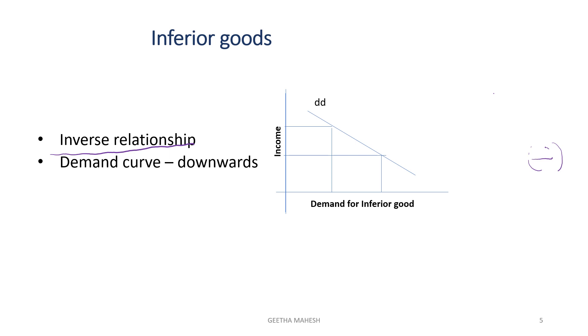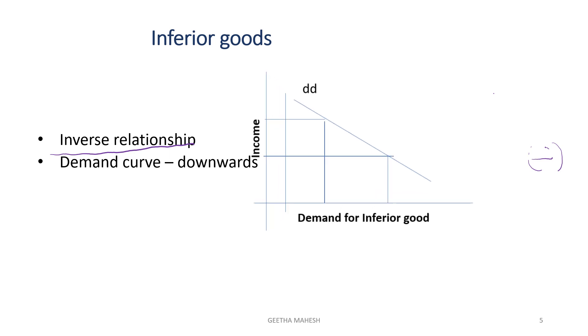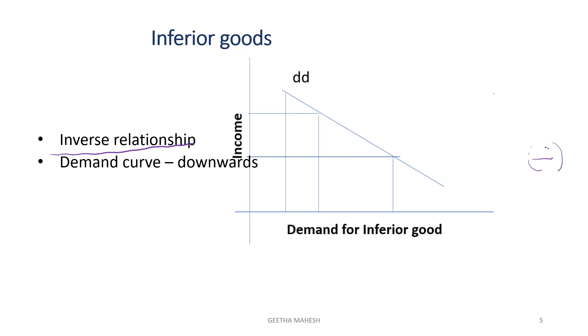As income of the consumer increases, demand for inferior goods decreases. So the demand curve for inferior goods has a downward slope.